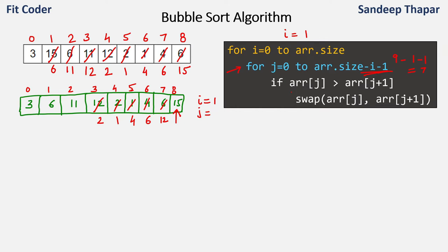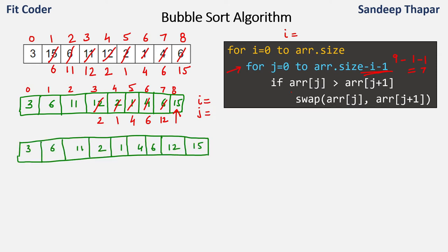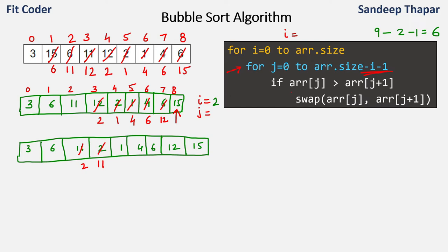So after the second iteration the array state is shown, and now we have placed 12 also in the right position. For the next iteration i becomes 2 and we run the inner for loop from j equal to 0 till array size (9) minus i (2) minus 1, so we run it till the 6th index — leaving the last two indices which are already in the right order. We compare the first two adjacent elements — right order. Then 6 and 11 — right order. Then 11 and 2 — not in the right order, so these will be swapped. Then 11 and 1 — swapped. Then 11 and 4 — swapped. Then 11 and 6 — swapped. So after the third round we have placed 11 also in the right position.